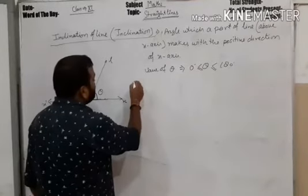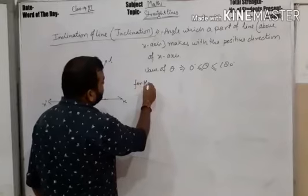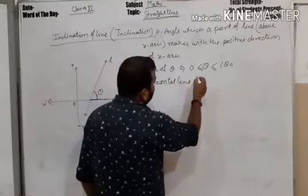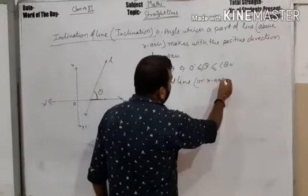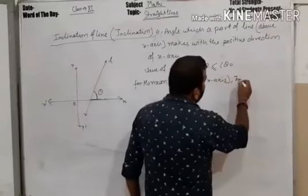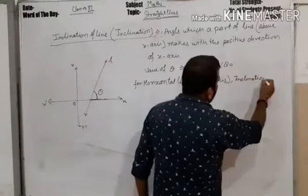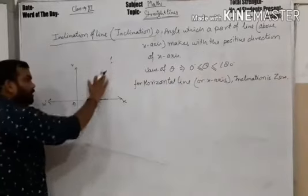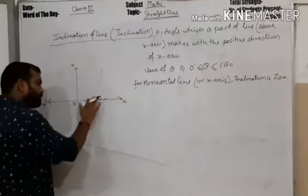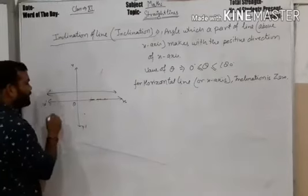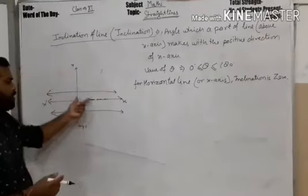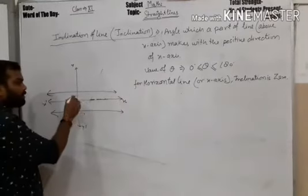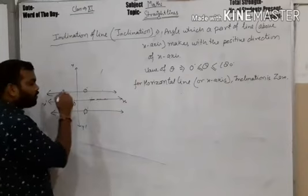If the line is horizontal — that is, parallel to the x-axis — the inclination is 0. A horizontal line is like this, and it is parallel to the x-axis; it does not make any angle with the x-axis, so its inclination will be zero.